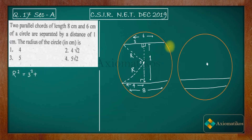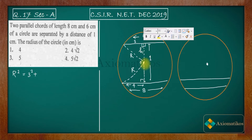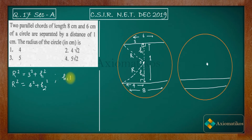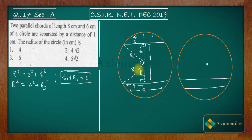Let the distance from the center to the 8 cm chord be h1, and from the center to the 6 cm chord be h2. Using Pythagoras: r² = 4² + h1² and r² = 3² + h2². For Case 1, where the center lies between the two chords, the relation between h1 and h2 is: h1 plus h2 equals 1.